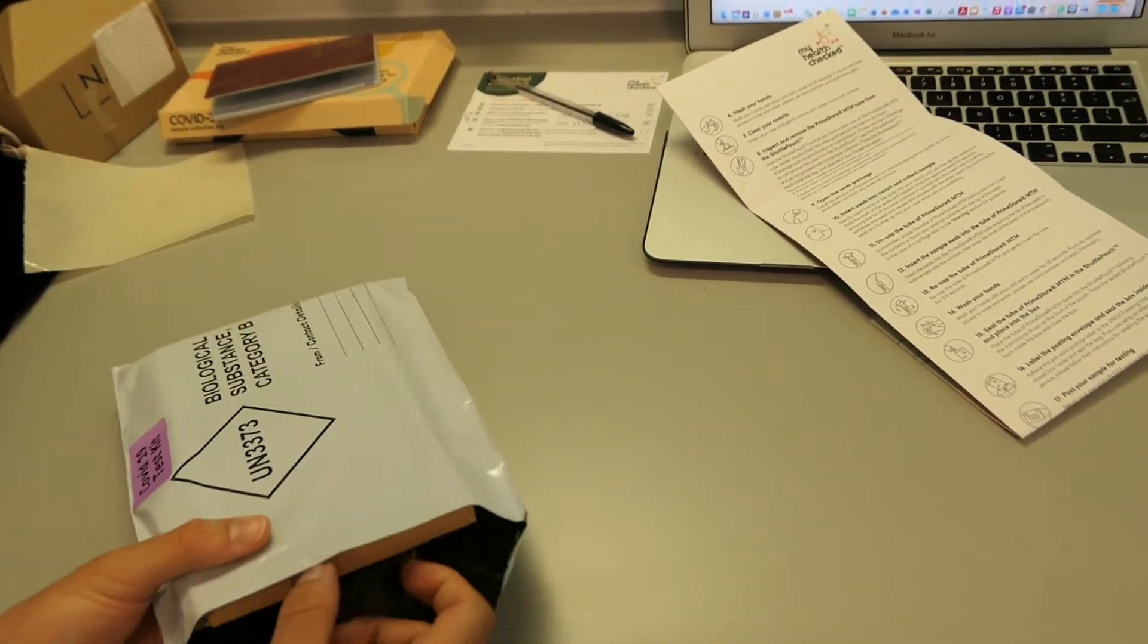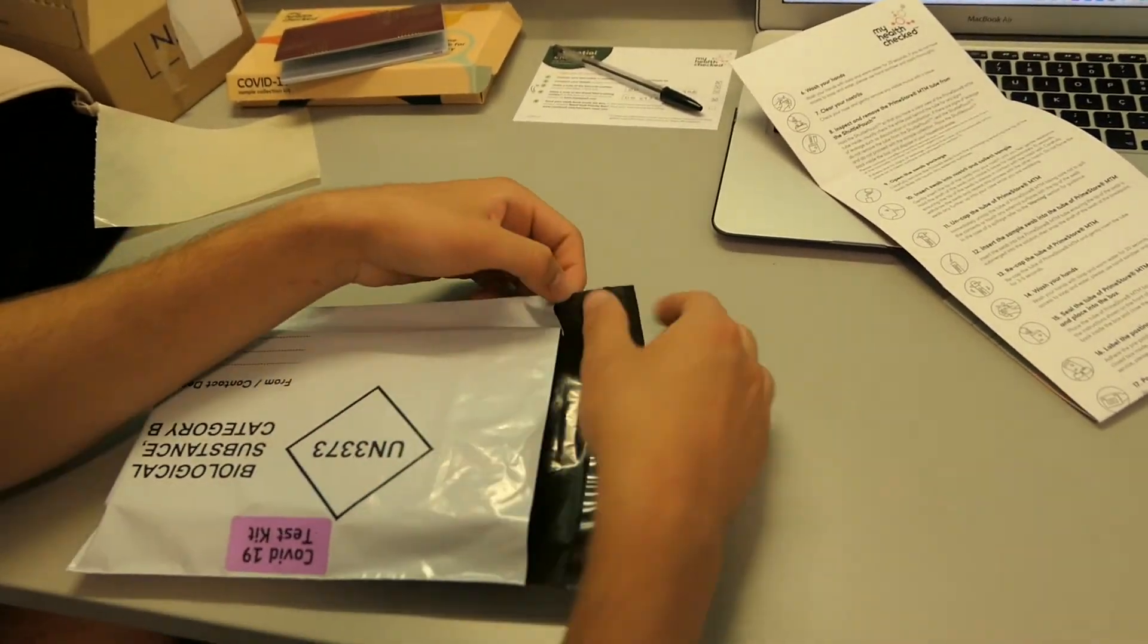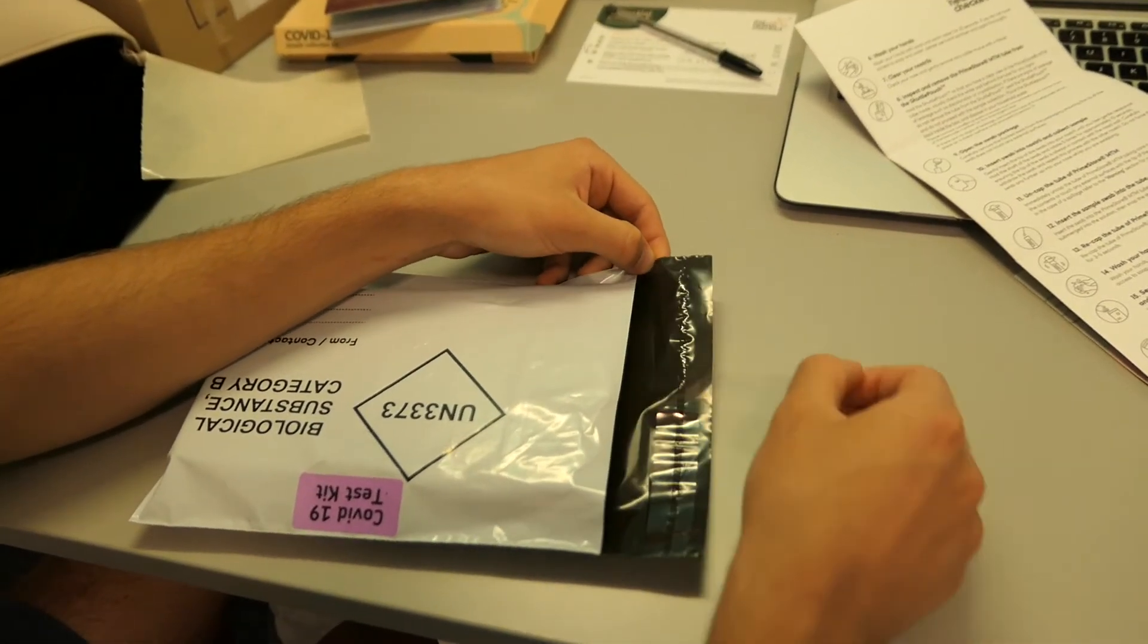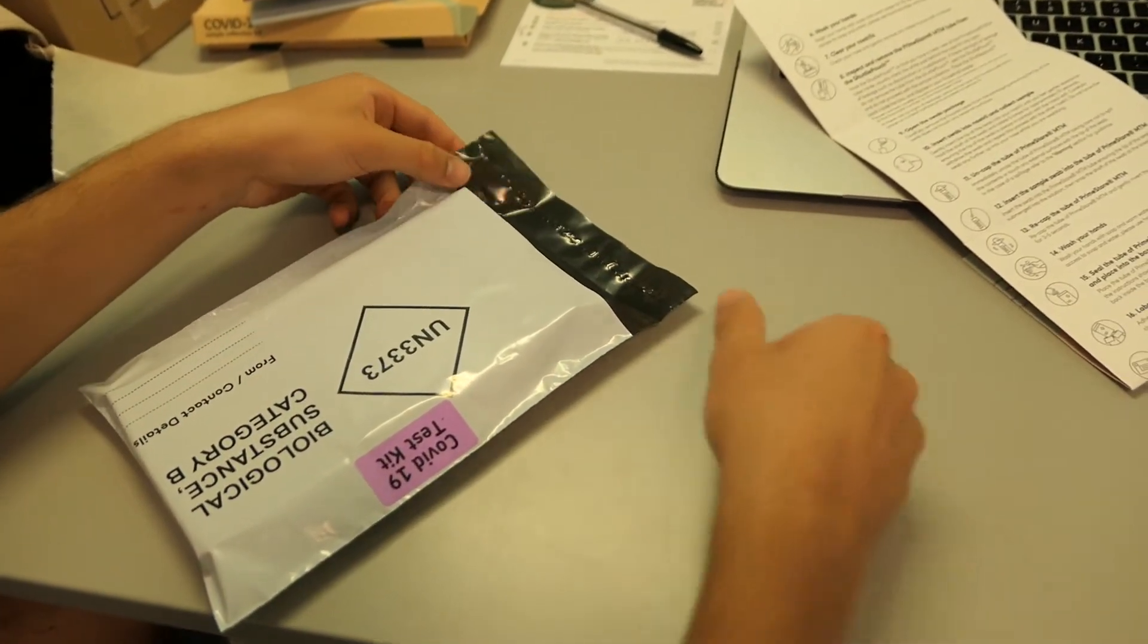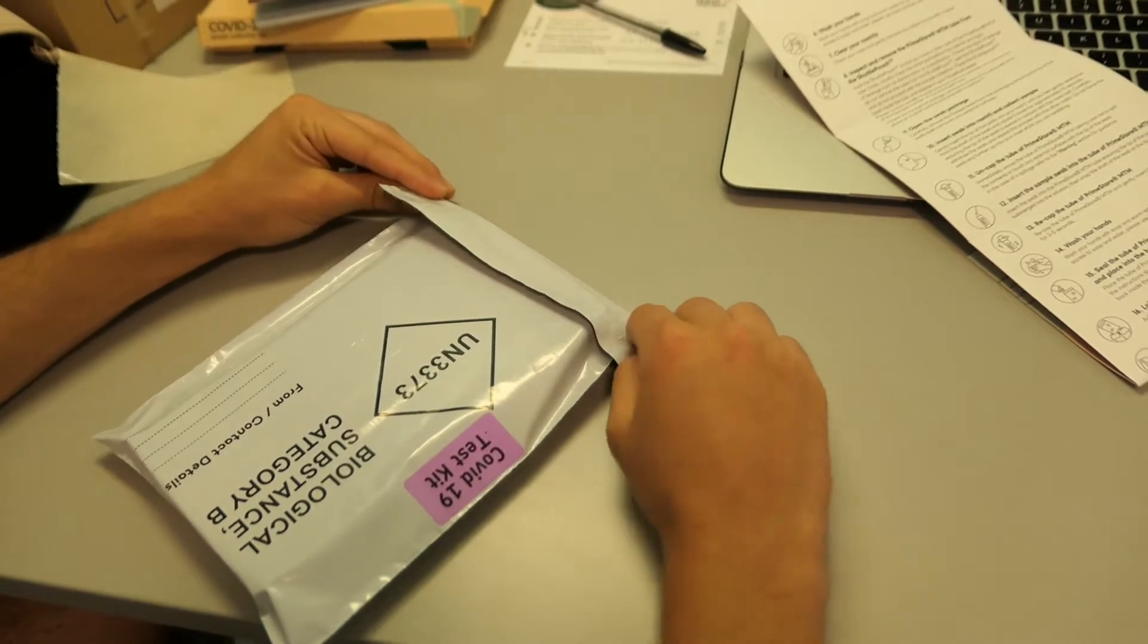Finally, return your prepaid UN-3373 posting bag to your nearest Royal Mail priority post box on the same day as taking your sample. You can find your nearest priority post box and collection times by visiting this site.